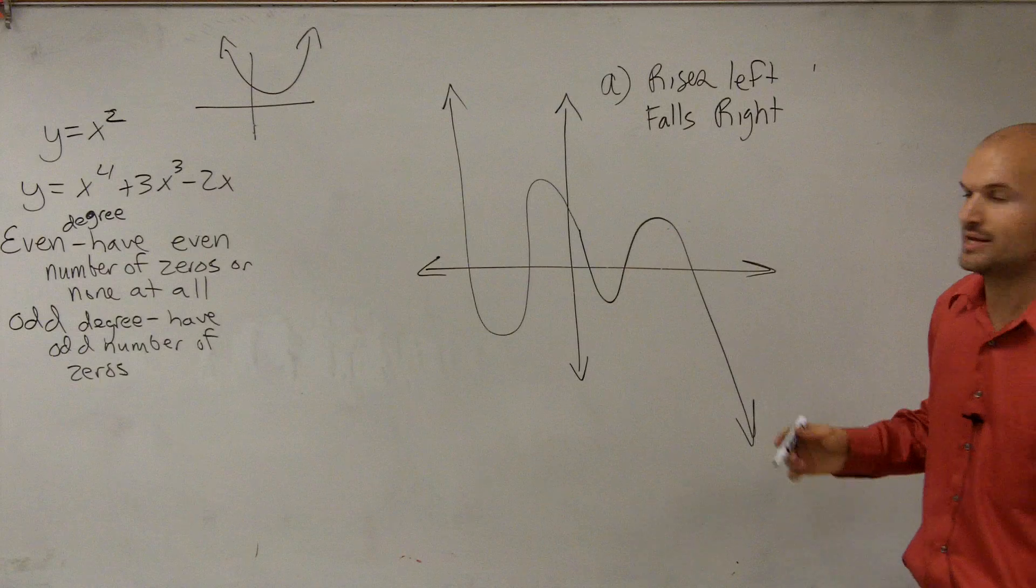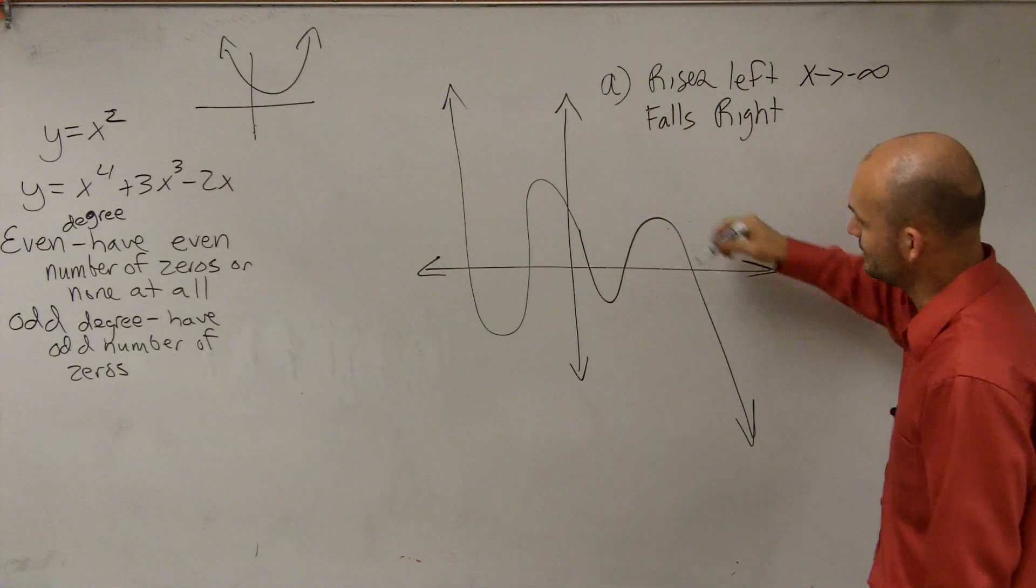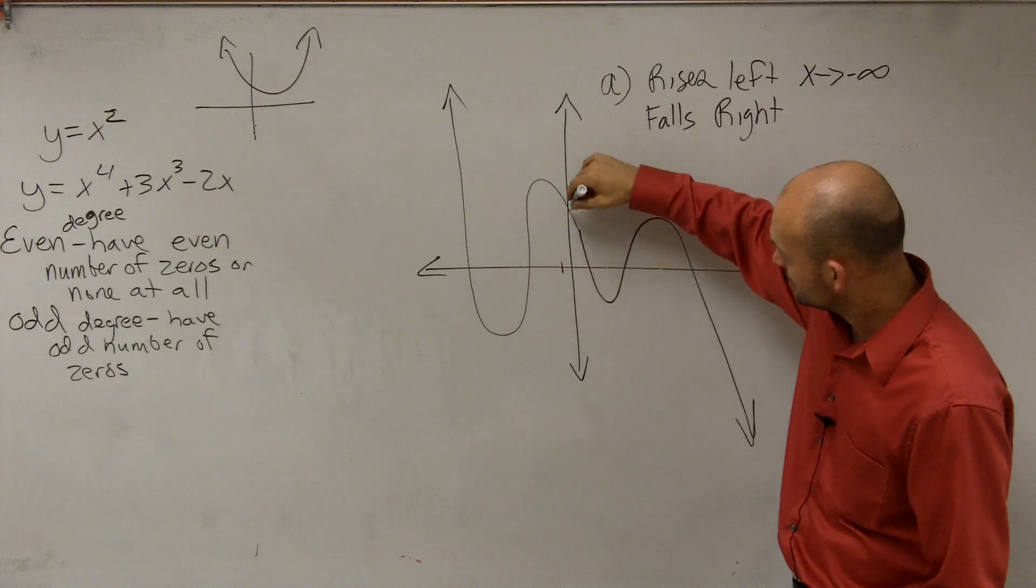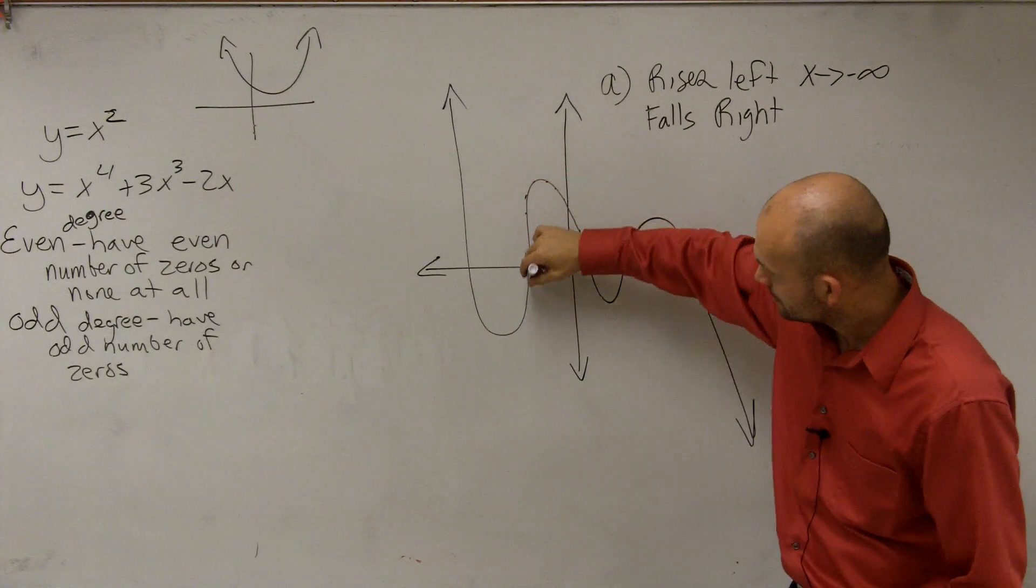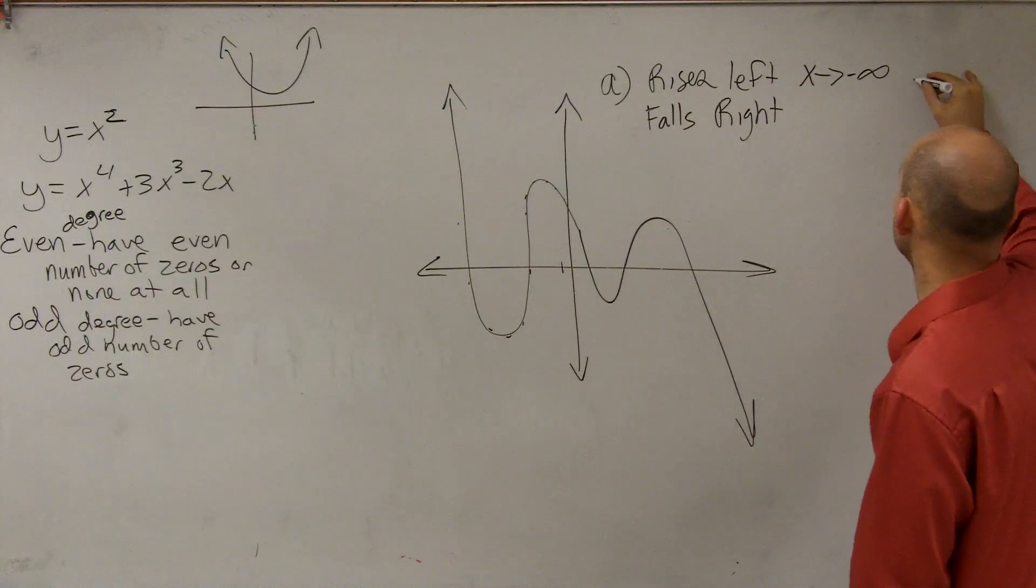But let's just make sure we write it in a mathematical format, which would be as x approaches negative infinity, so that means as my x coordinates go to the left, my output coordinates are going to rise up to infinity.